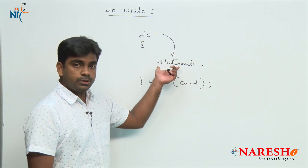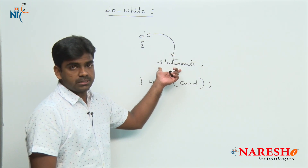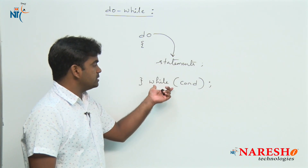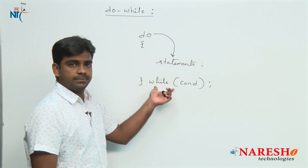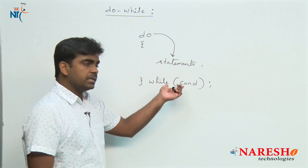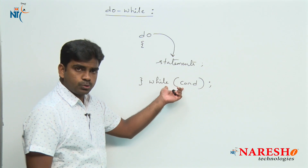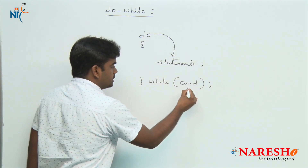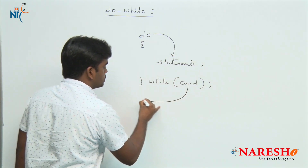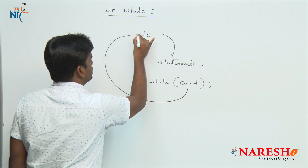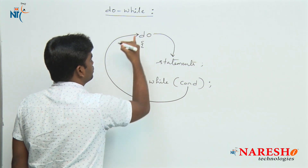After executing the statements, the control comes out and checks the condition. If the condition is true, once again it will go and execute — it will repeat the loop.